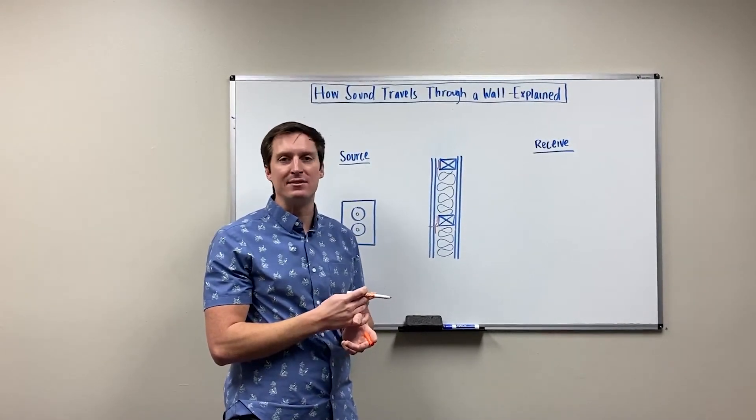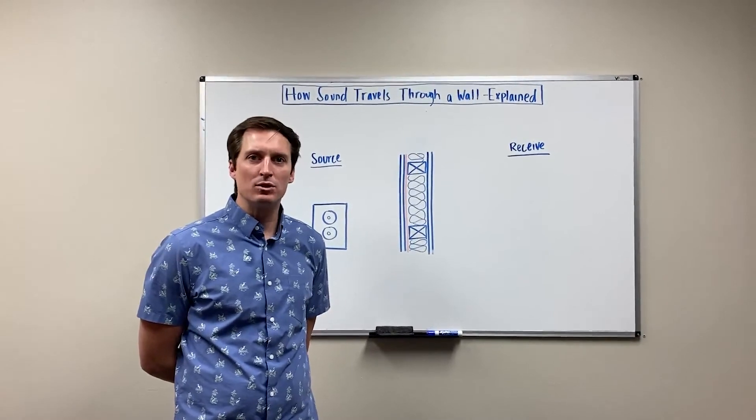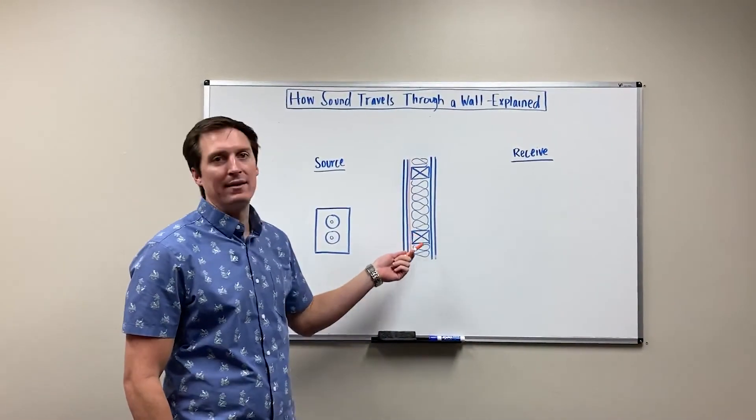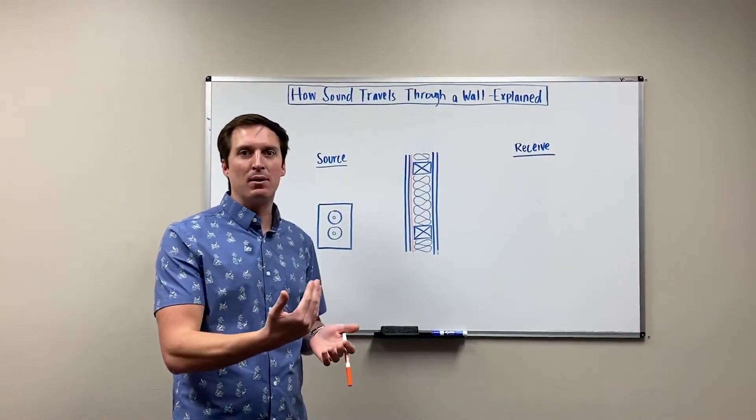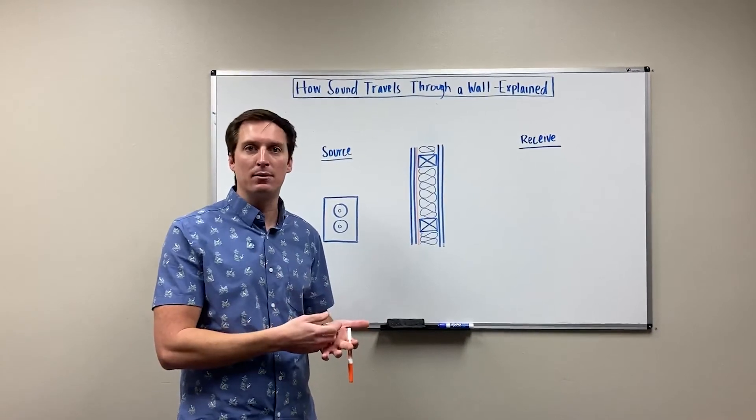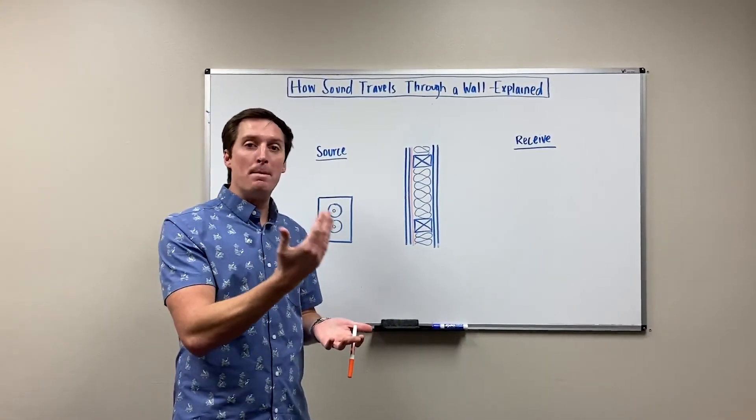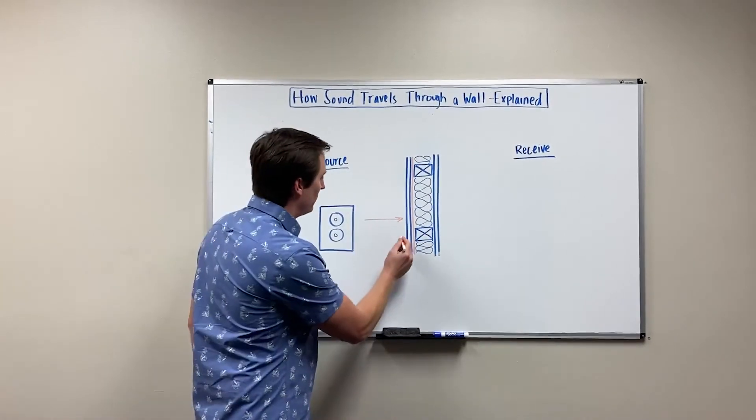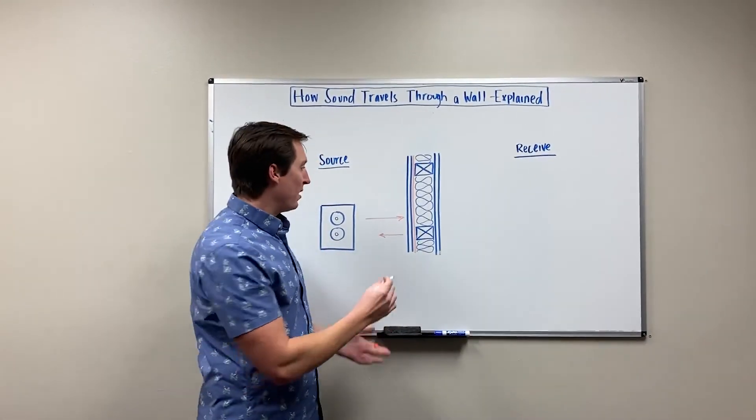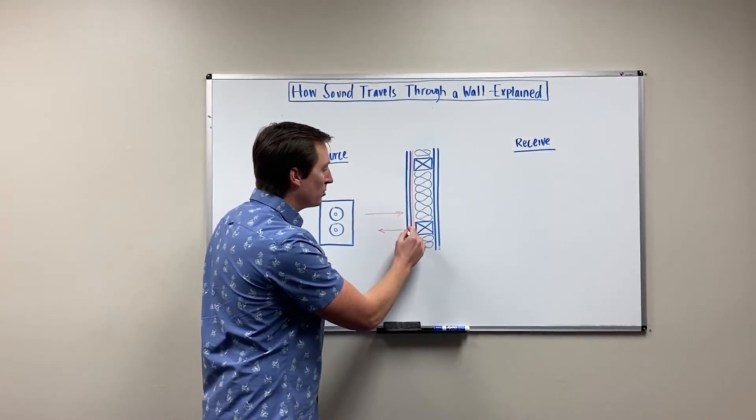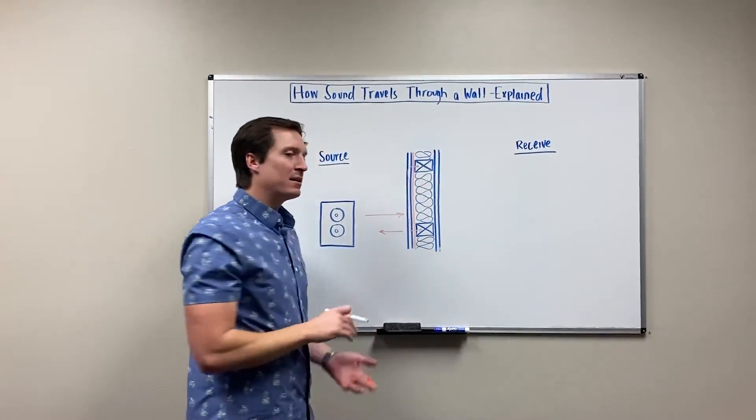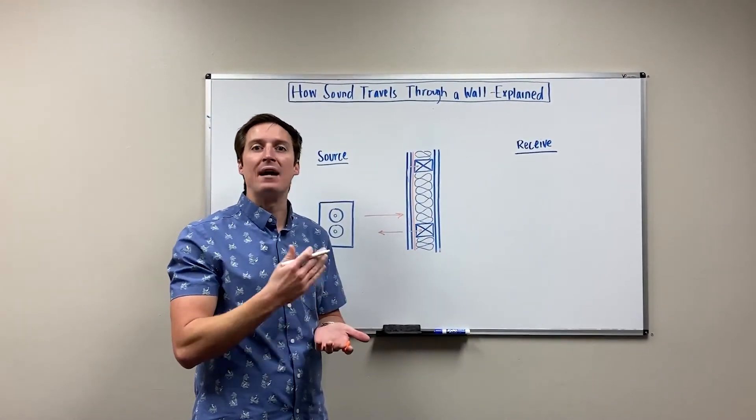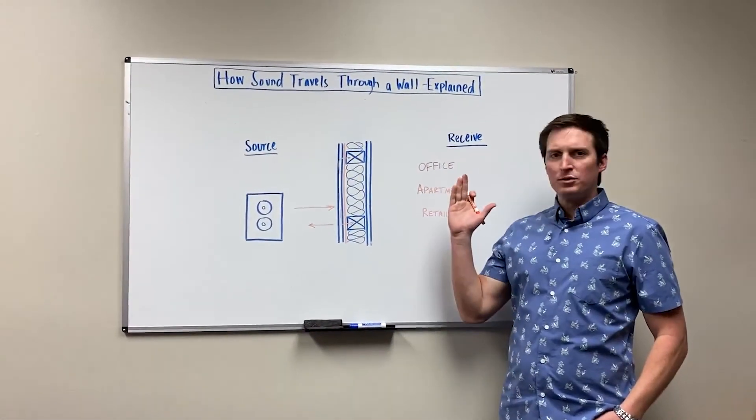Another approach to consider, which we recommend to a lot of architect clients, is the use of a mass loaded vinyl membrane. This is sandwiched between the drywall and the stud. The benefit is twofold: you add mass to the partition—it's a significantly heavy product, about one pound per square foot—so there's a significant amount more mass to reflect the initial wave of sound hitting the wall. Beyond that, the sound that gets into the initial layer of drywall has a harder time transmitting into the studs. That's because mass loaded vinyl is also a softer, more flexible product that doesn't allow sound to transmit vibrationally through it.